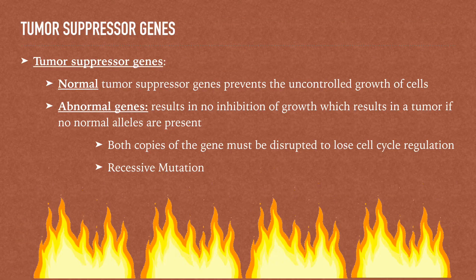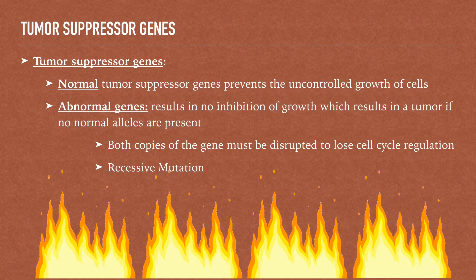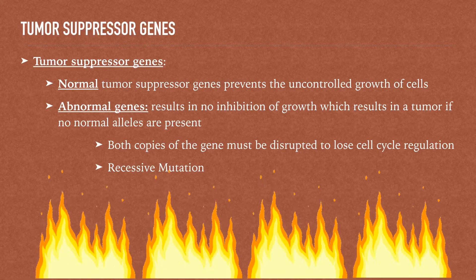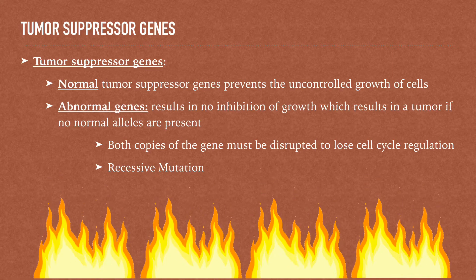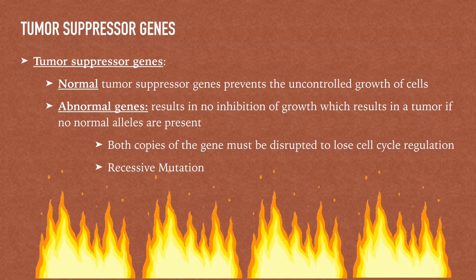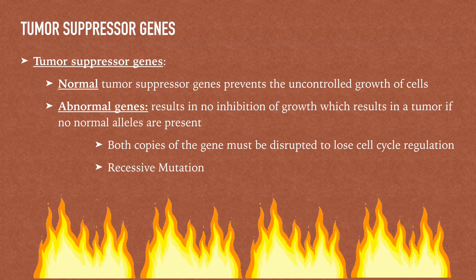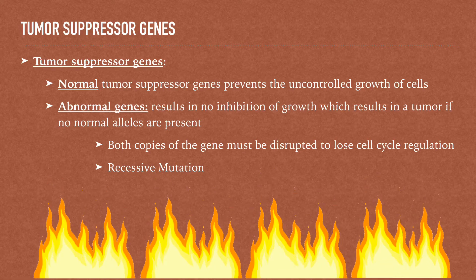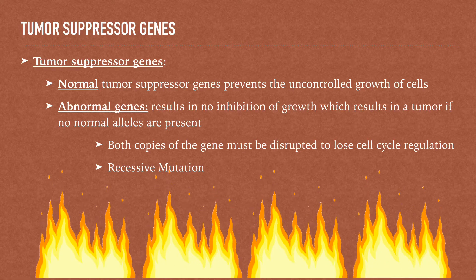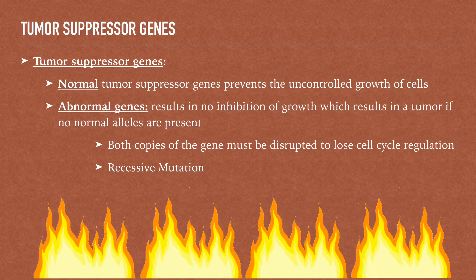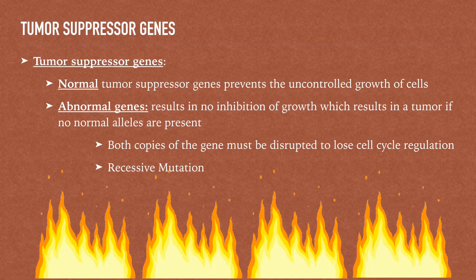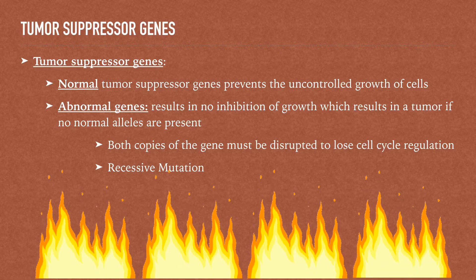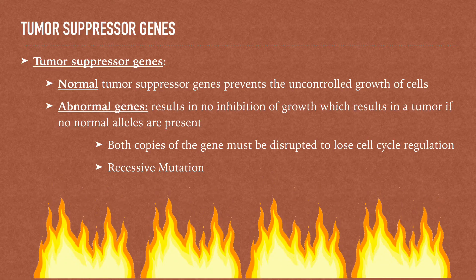A normal tumor suppressor gene prevents the uncontrolled growth of cells by stopping the cell from undergoing the cell cycle. When there is a mutation in both copies of the gene, it results in the tumor and loses cell cycle regulation. This is called a recessive mutation, meaning that both copies of the alleles must be mutated.